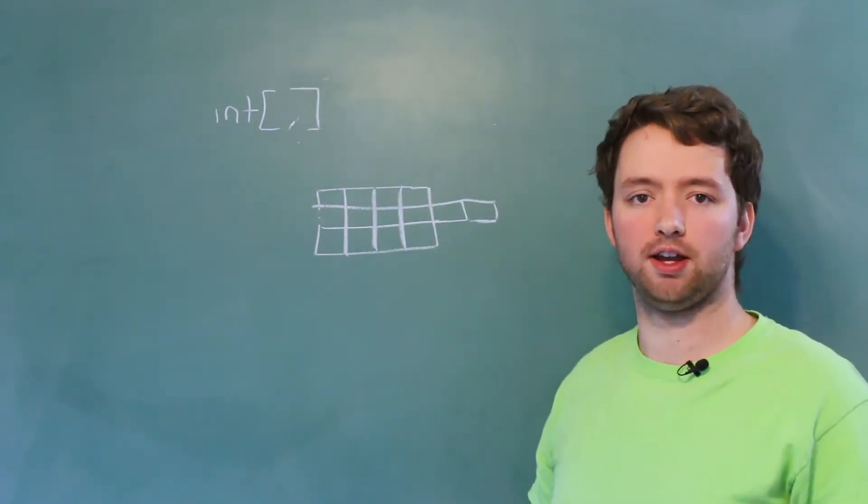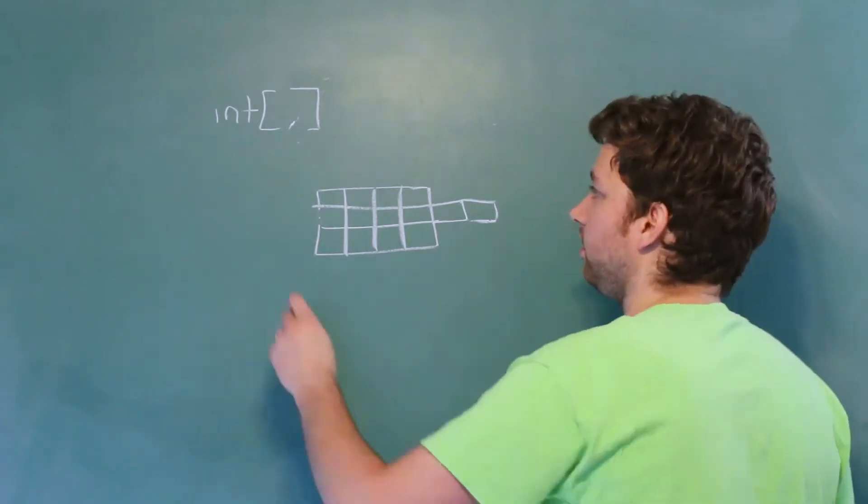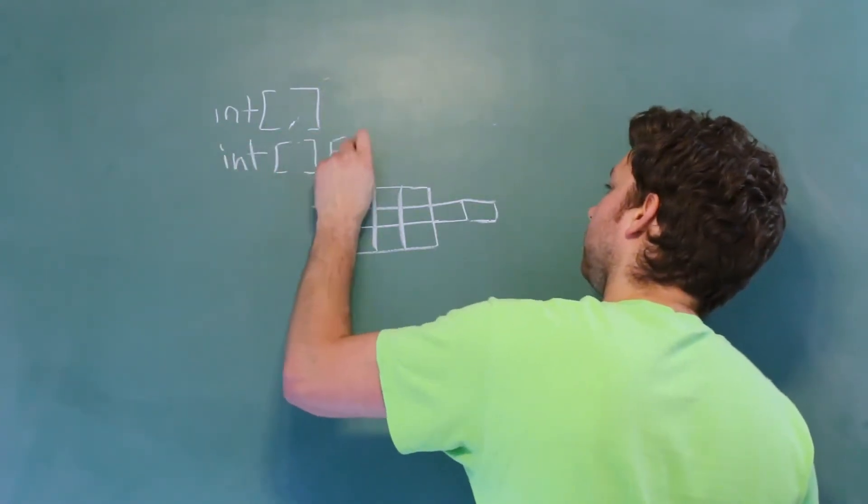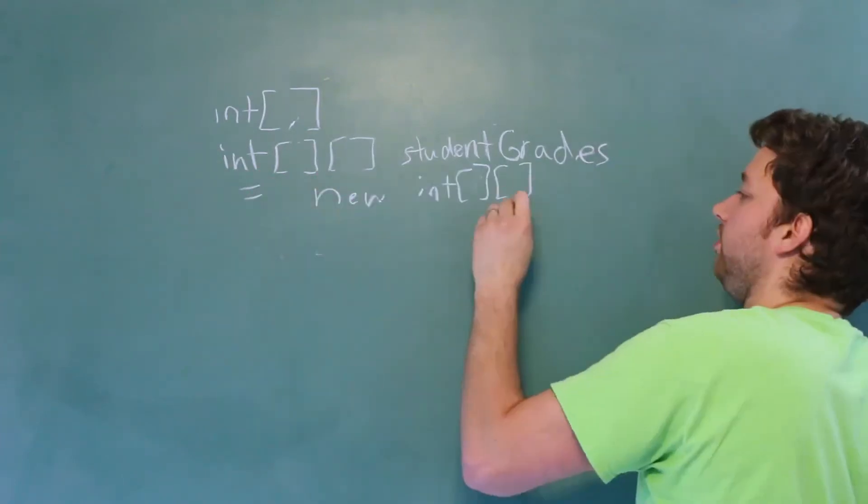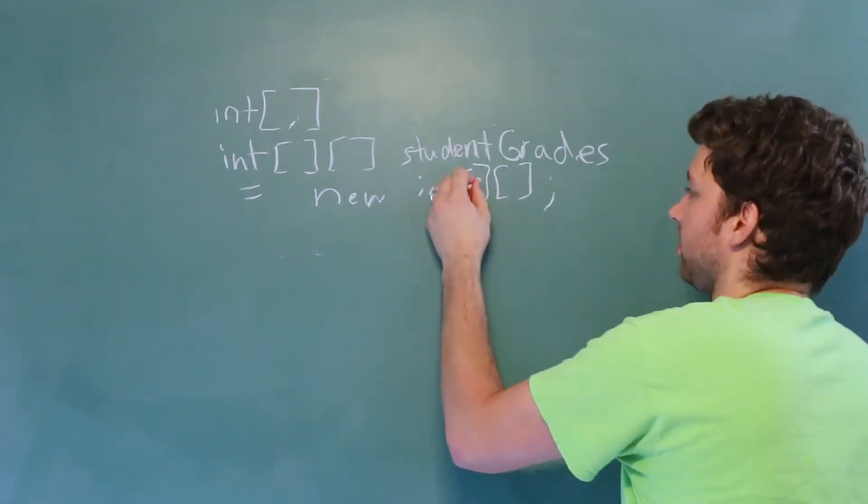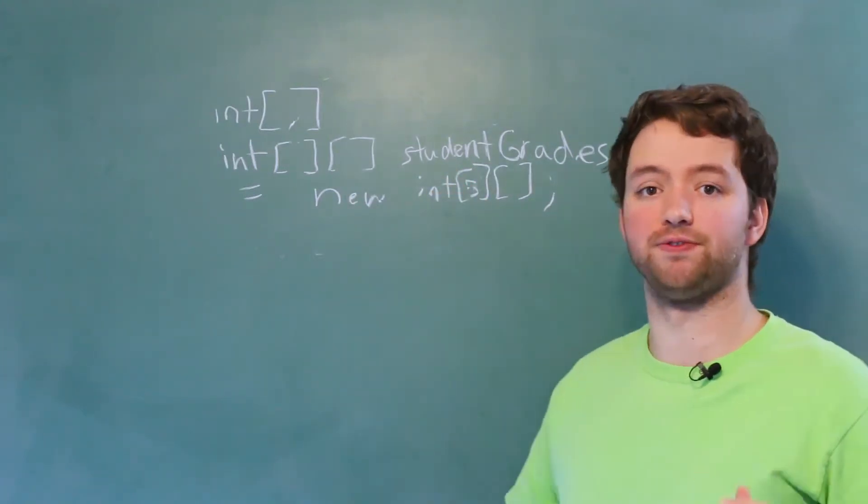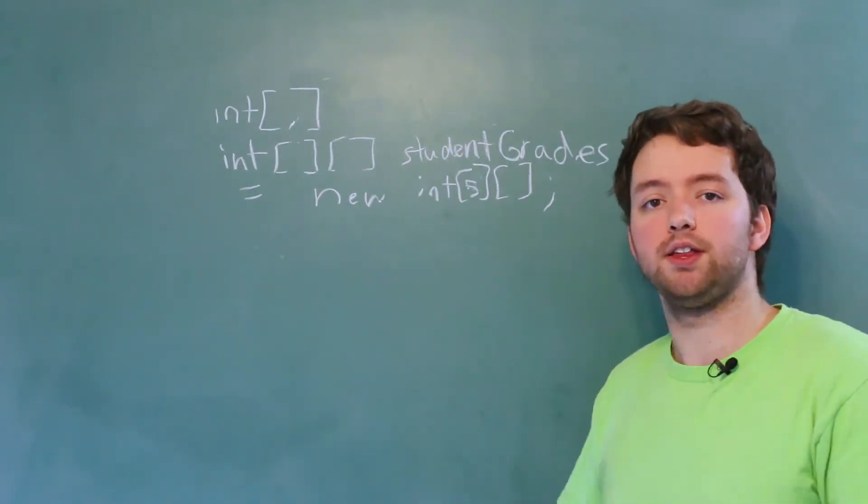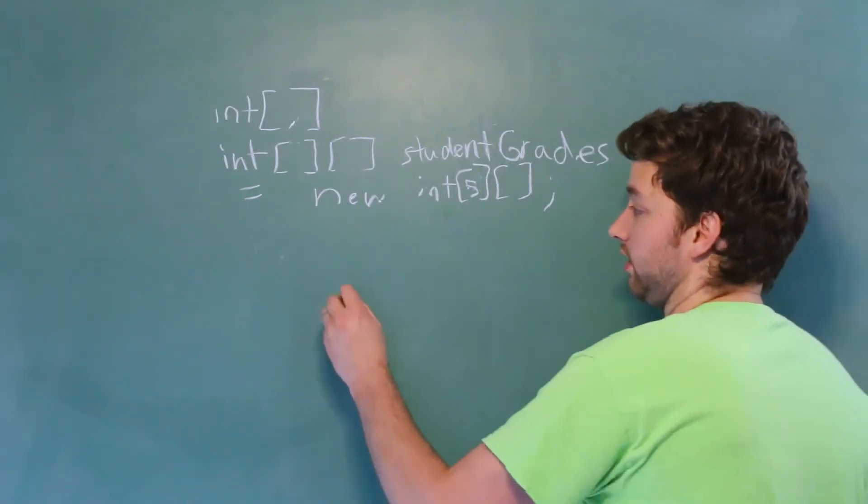Instead, you're going to need a jagged array, and the syntax is just a little bit different. You're going to say int and actually use two square brackets. And then what you're going to do is say new int with the two square brackets, and then you need to pass in a size for the first one. So for example, we could say five. So that's saying there's five rows. The actual positions in these arrays, so how many columns, that can vary from row to row.